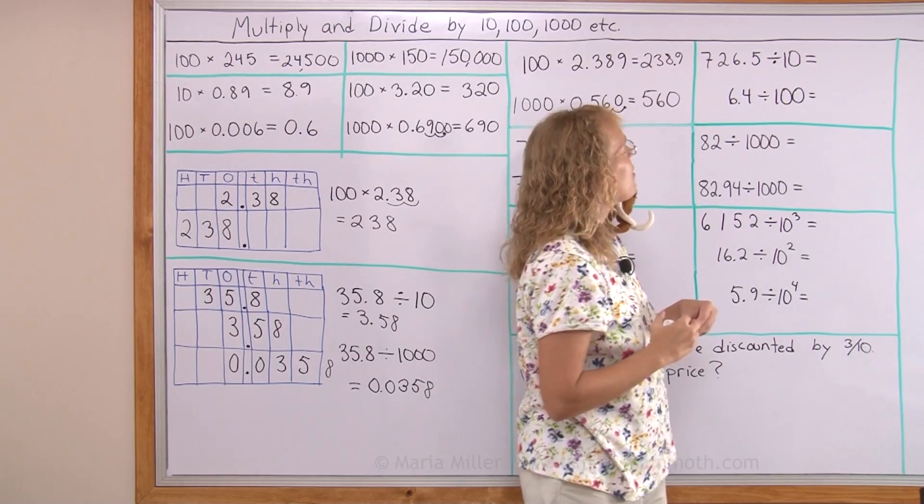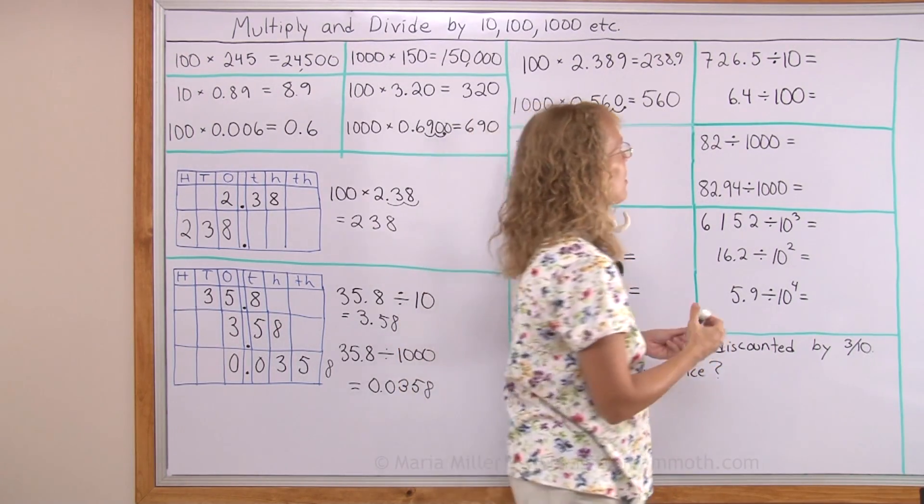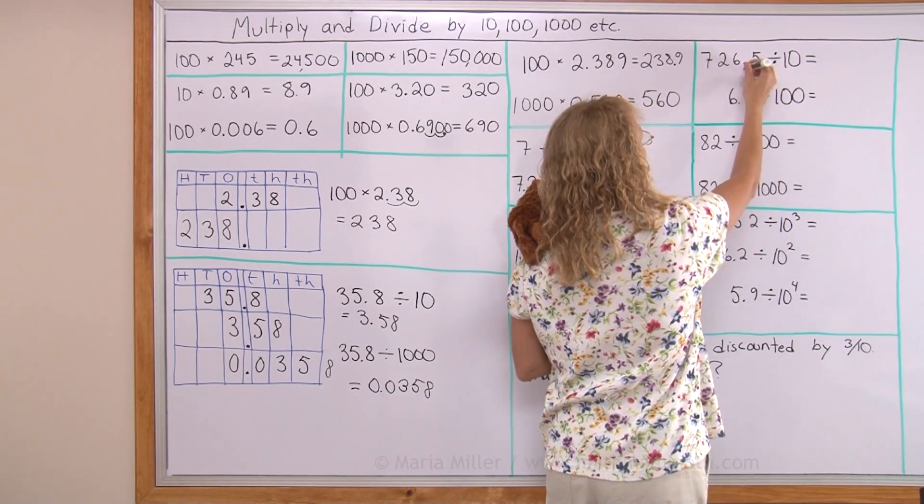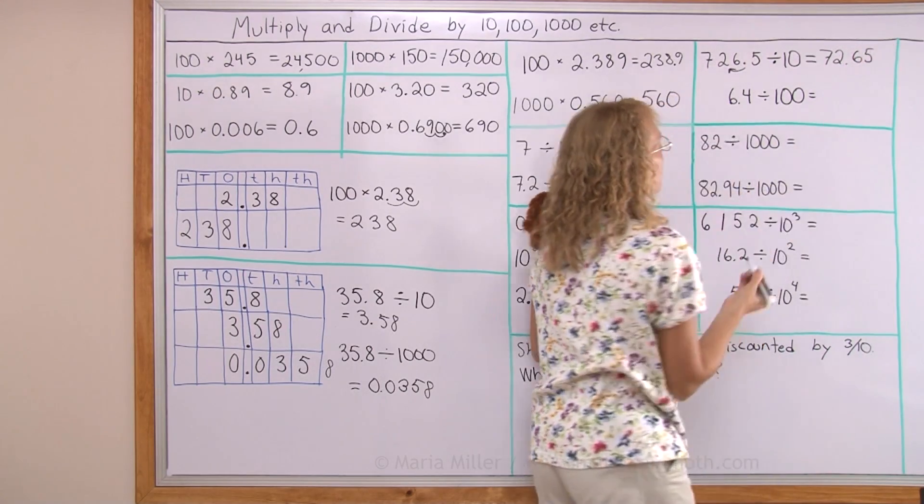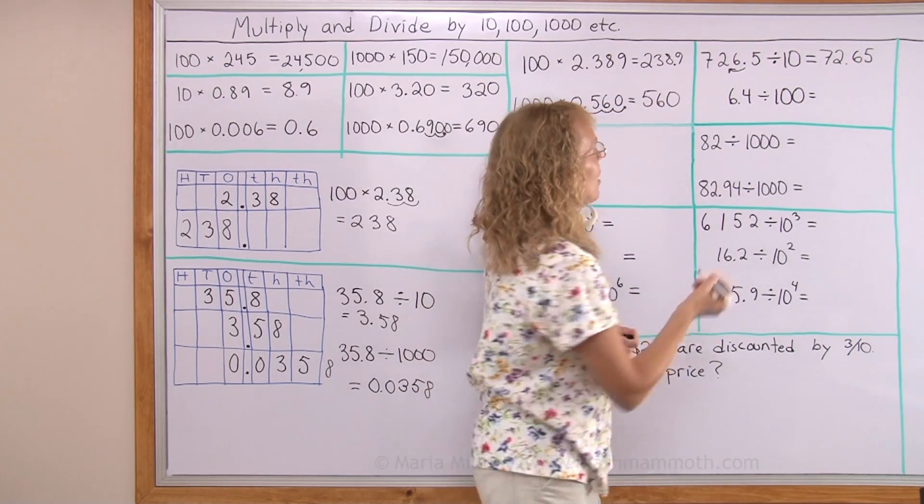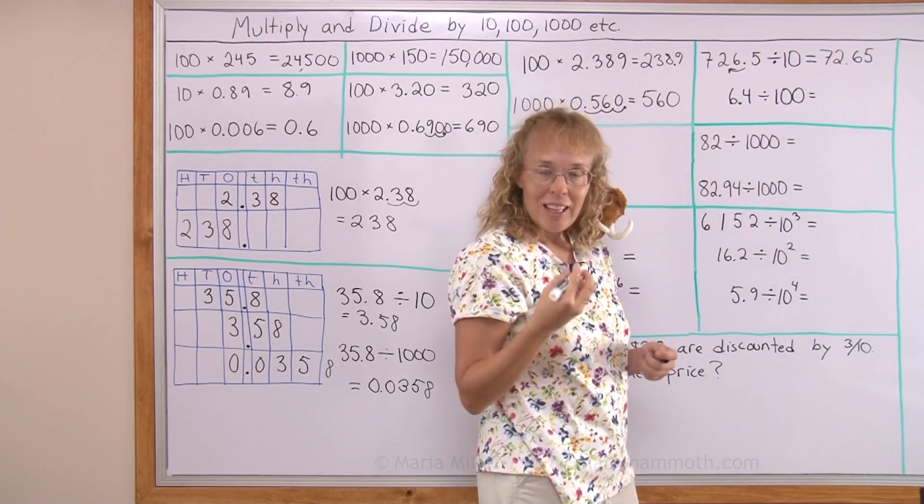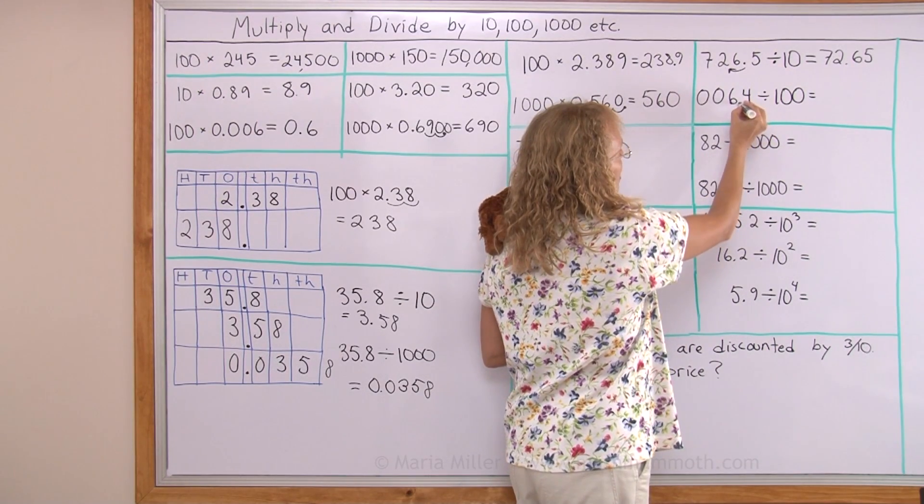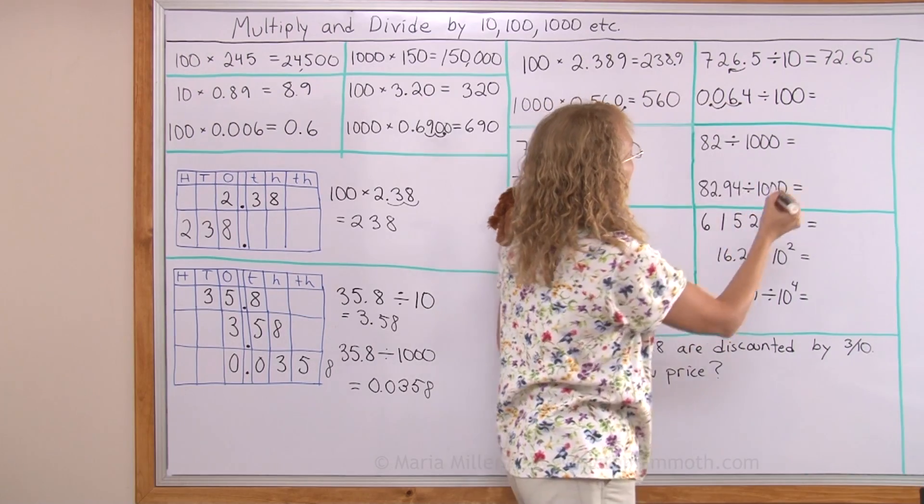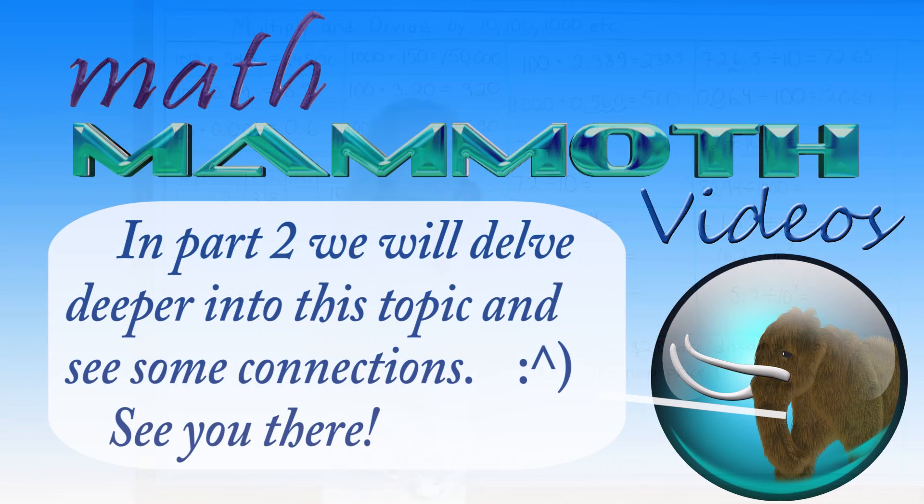Or divisions. 726.5 divided by 10. Let's move the decimal point one step backwards so that the number becomes smaller, 72.65. 6.4 divided by 100. Move my decimal point again backwards here two steps. And for that I will again put a zero here to help me move it. Or zeros. Two steps, here, here. There it goes. 0.064.